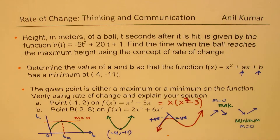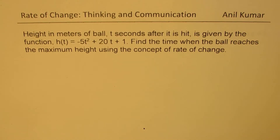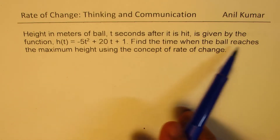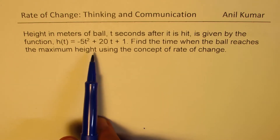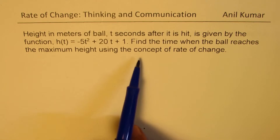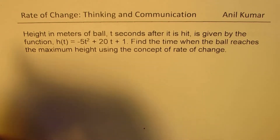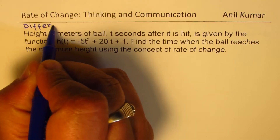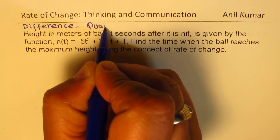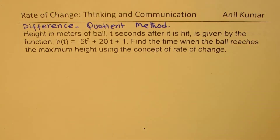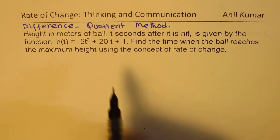Using this concept, let's answer these questions one by one. This is a thinking and communication question where we use the difference quotient formula. The height function is h of t equals minus 5t squared plus 20t plus 1. Find the time when the ball reaches maximum height. Since the point is not given, we will use the difference quotient method. At the maximum, the instantaneous rate of change is zero.